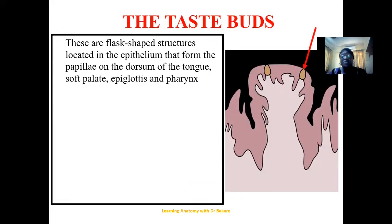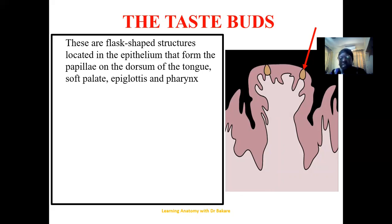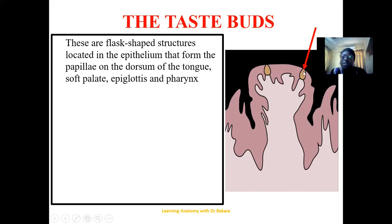The taste buds are responsible for the sensation of taste. These structures are embedded within the epithelium of the papillae. The papillae are swellings of mucous membrane on the anterior two-thirds of the tongue, and within the epithelium of these swellings you have taste buds embedded. Some papillae have taste buds while some are devoid of them. The taste buds are not only limited to the anterior tongue — you may also see them in the soft palate, the epiglottis, and the pharynx.